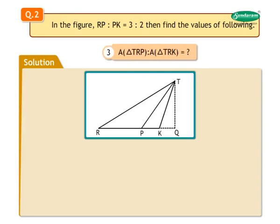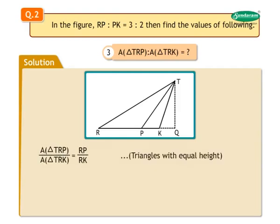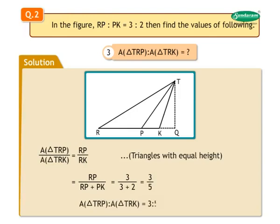Number 3: Find the ratio of area of triangle TRP upon area of triangle TRK. Area of triangle TRP upon area of triangle TRK equals RP upon RK, as they are triangles with equal height. Therefore, RP upon RP plus PK equals 3 upon 3 plus 2, which equals 3 upon 5. Thus, the ratio of areas of triangles TRP and TRK is 3 is to 5.